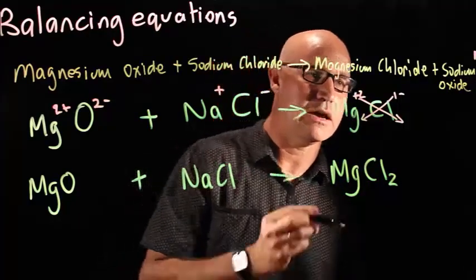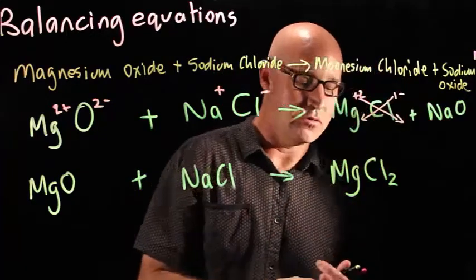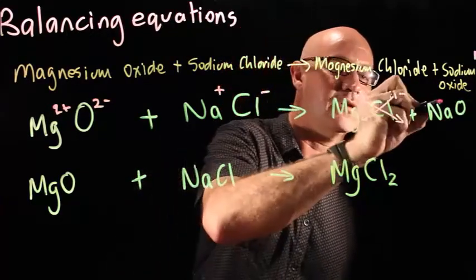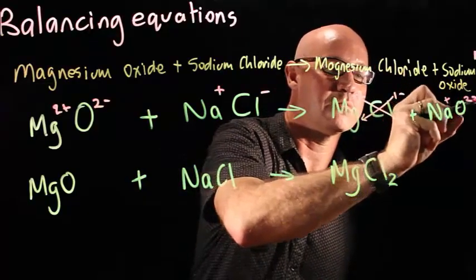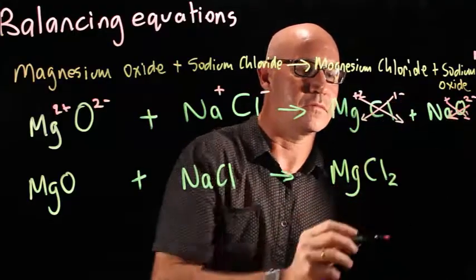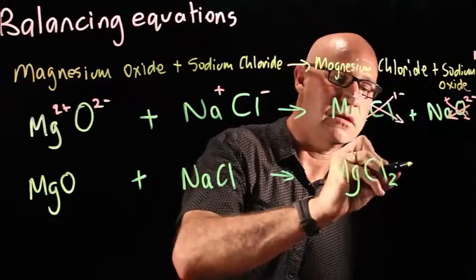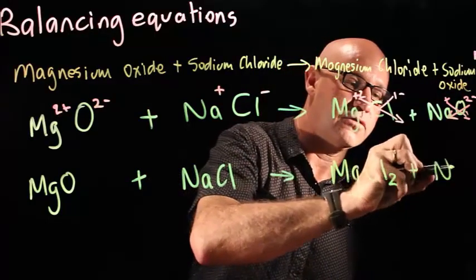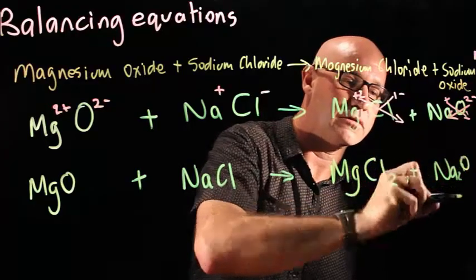And now we've got sodium oxide. Put in our charges. Sodium is 1+, oxide is 2-. Do our crossover, and we end up with 2 sodiums and 1 oxygen.